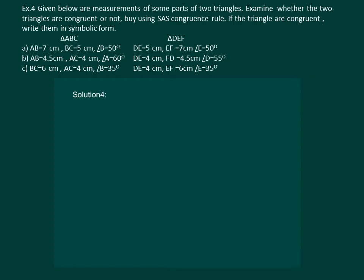Given in the question are measurements of some parts of two triangles. Examine whether the two triangles are congruent or not by using SAS congruency rule. If the triangles are congruent, write them in symbolic form.